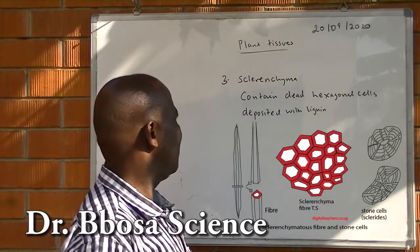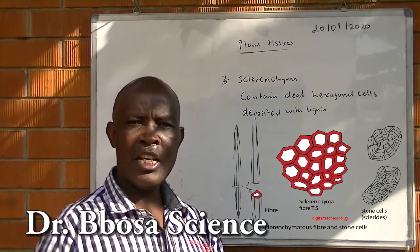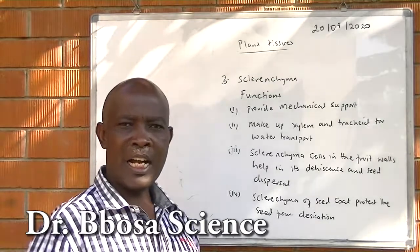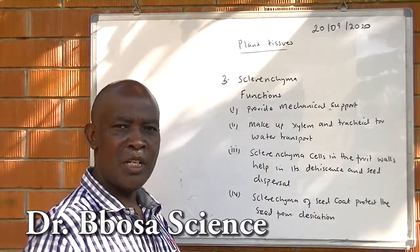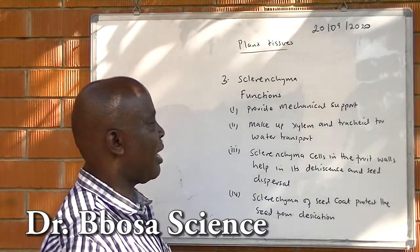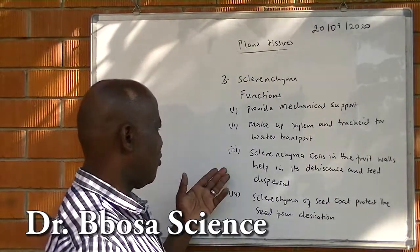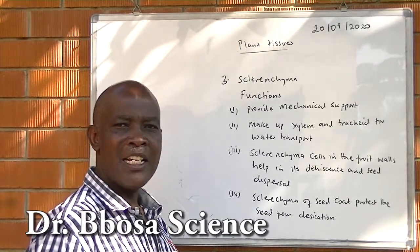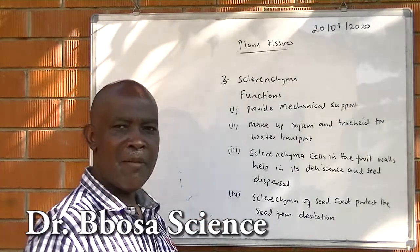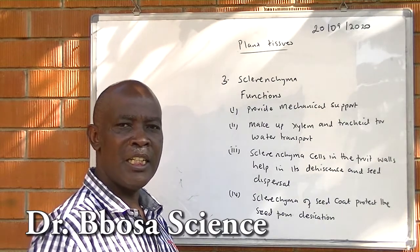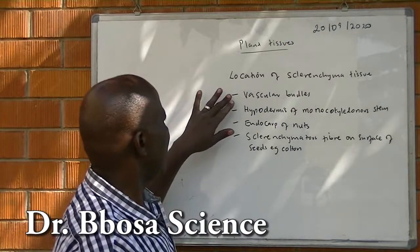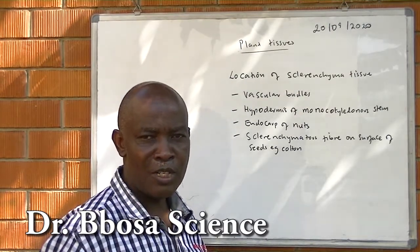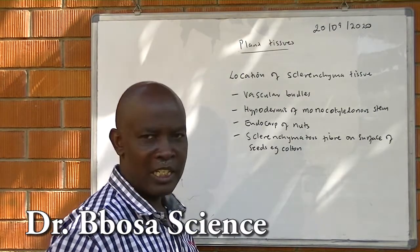Three: sclerenchyma tissue contains dead cells with walls deposited with lignin. Functions of sclerenchyma tissue: one, sclerenchyma provides mechanical support to the stem and roots. Two, sclerenchyma makes up xylem and tracheids for water transport. Three, sclerenchyma cells in the fruit walls help in its dehiscence and disposal of seeds. Four, sclerenchyma of the seed coat protects the seed from desiccation. Location of sclerenchyma tissue: in the vascular bundle, hypodermis of monocotyledonous stem, endocarp of nuts, and sclerenchyma outer tissue on the surface of seeds.